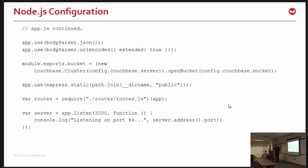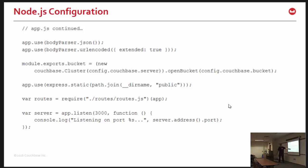A little more configuration: body-parser has to be configured so Express can handle it. We export the bucket by connecting to the Couchbase cluster at the URL specified in config and opening the specific bucket. I set up a static folder where my client-side Angular JavaScript will live. I set up routes — this is where the endpoints are defined. And finally, I kick off the server listening on port 3000, writing a confirmation message to the console.